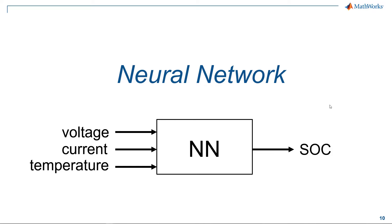One thing a neural network needs is lots and lots of training data. The data is labeled and fed to the network, which in turn tries to learn the patterns of change in the input variables that lead to a certain outcome.